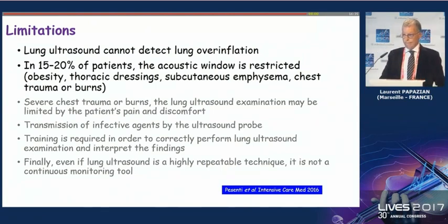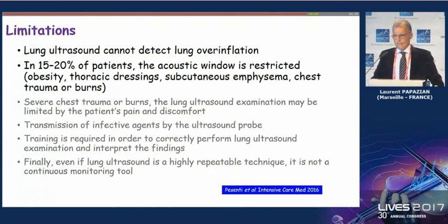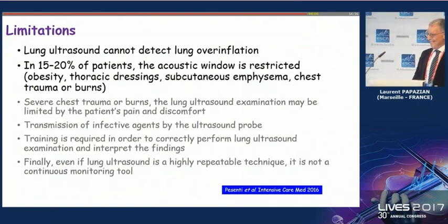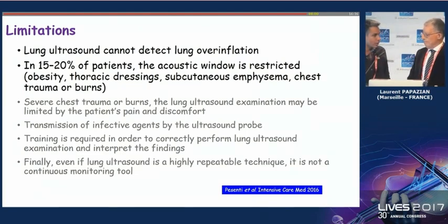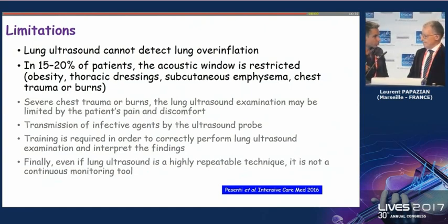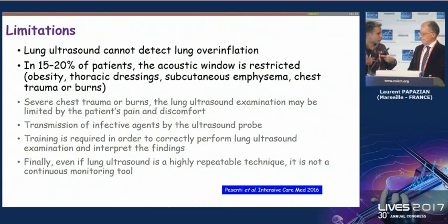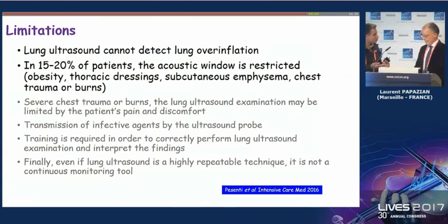Thank you very much for your very clear talk. Question from the audience: when performing lung ultrasound, you said that in the posterior chest wall you don't see much recruitment. If using PEEP you see recruitment in the anterior chest wall but the patient is still hypoxic, would you still titrate PEEP up based on anterior chest wall recruitment when the posterior chest wall may not show recruitment? How would you proceed in that case?